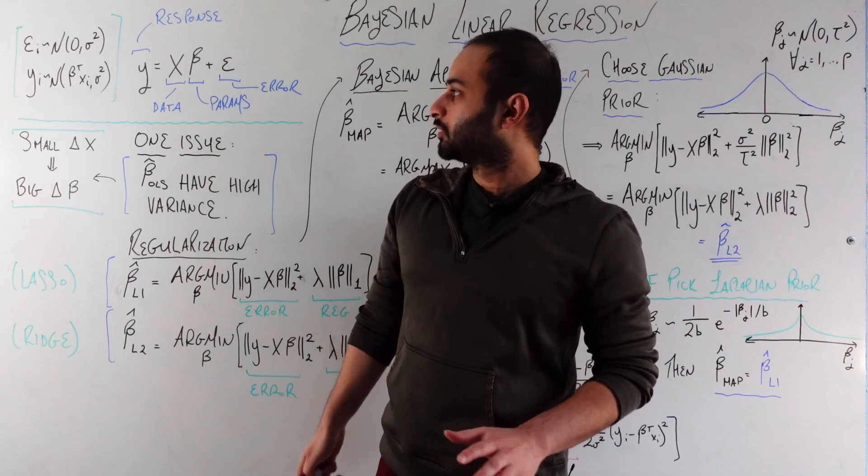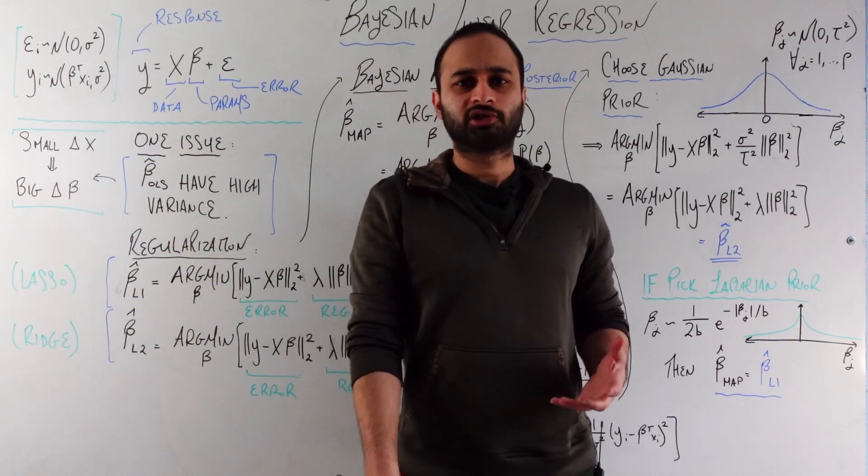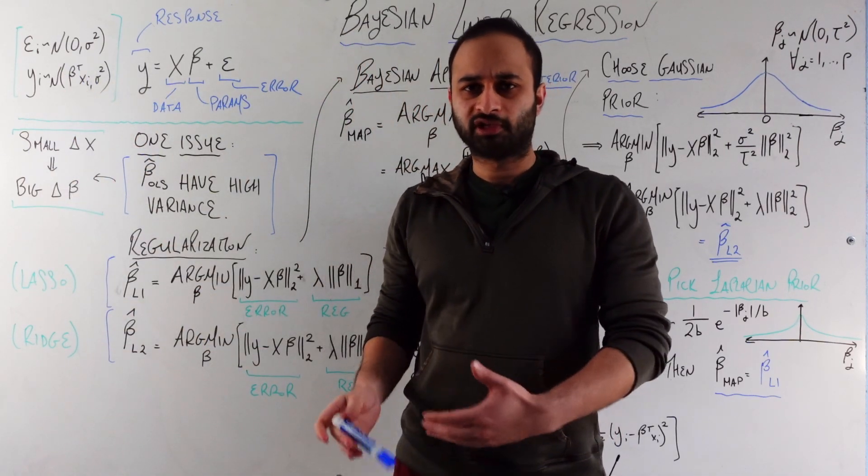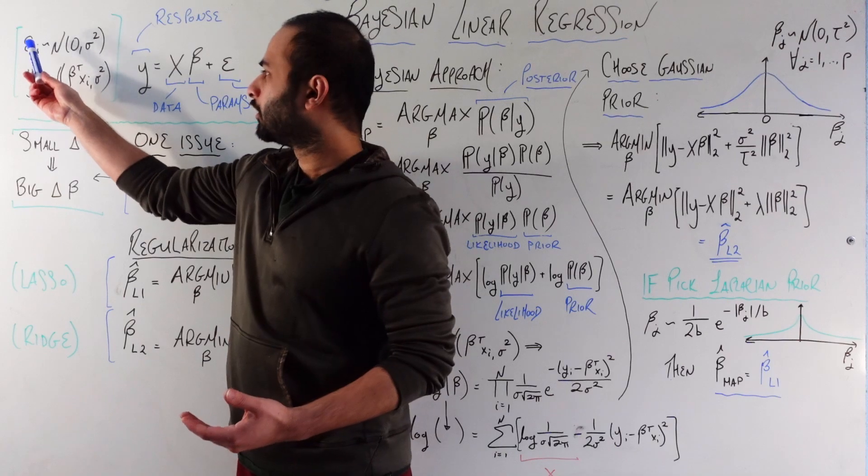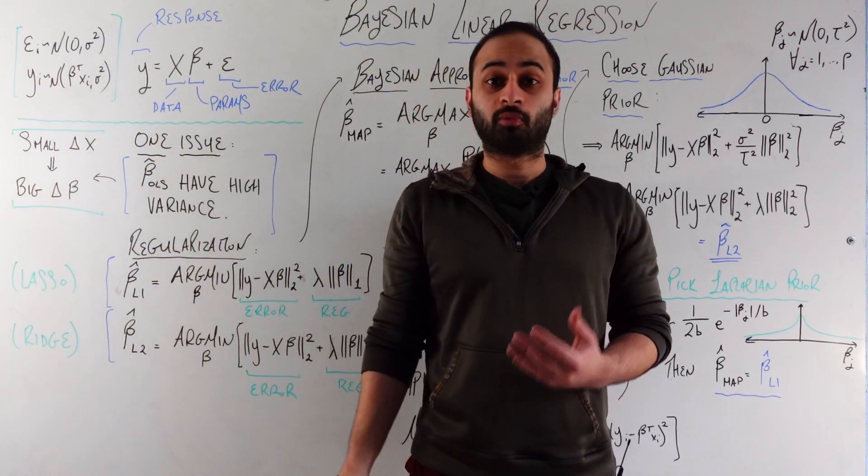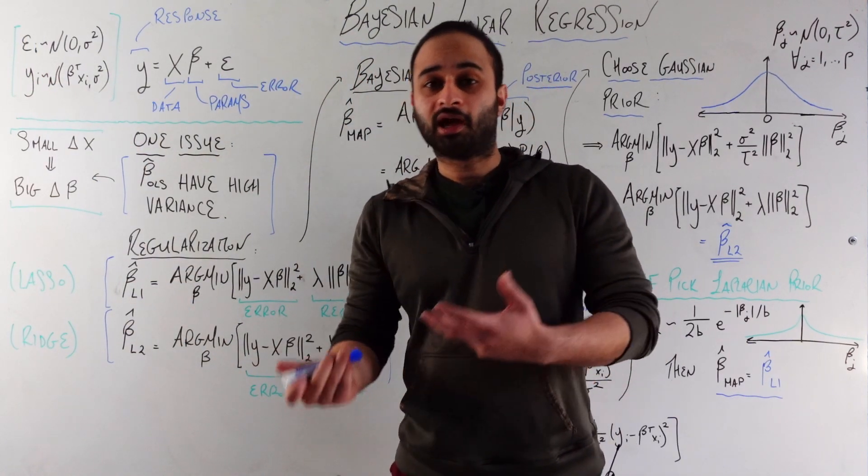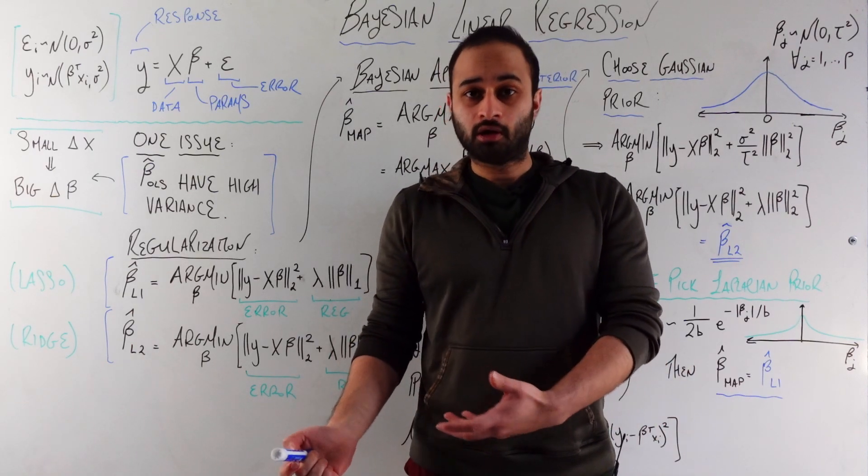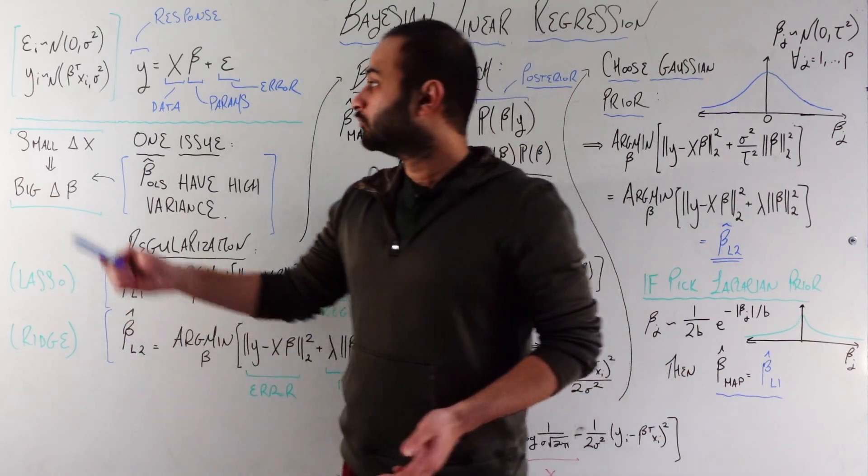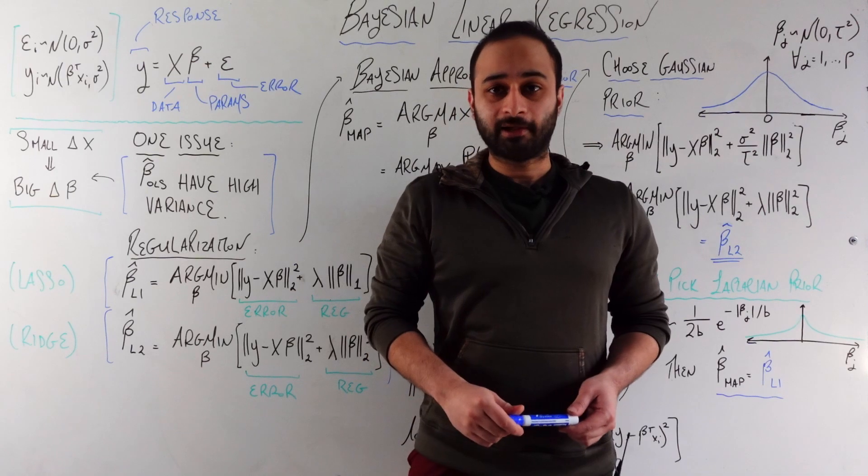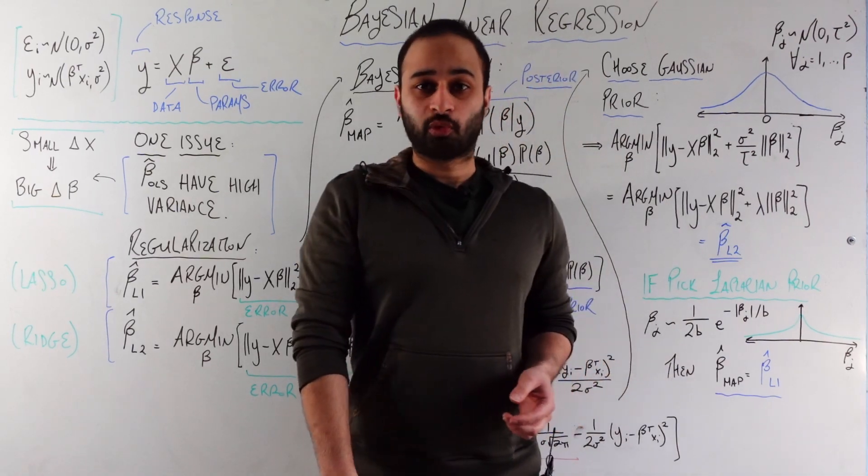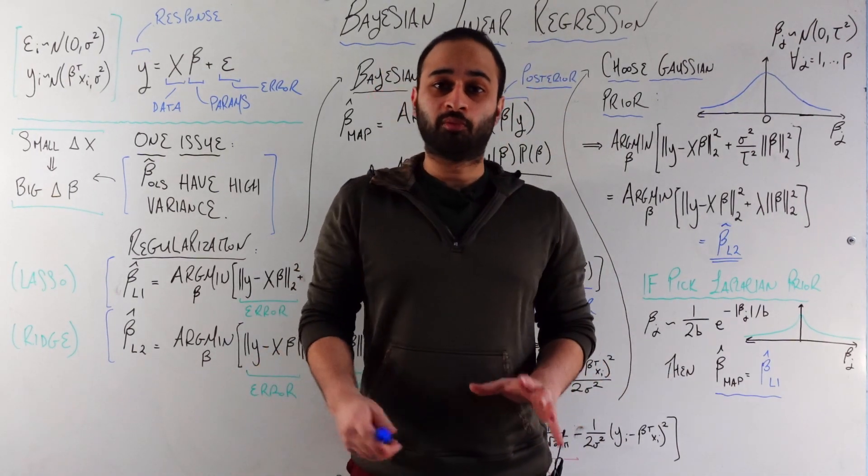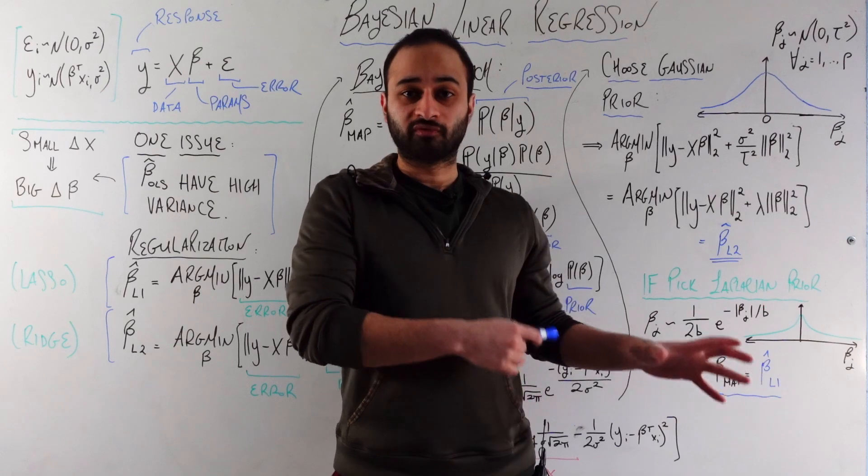In terms of equation, we're saying that x times beta plus some error epsilon is going to be equal to the response variable that we see. That is our assumption for linear regression. A couple of other assumptions are stated here. We're assuming that these errors epsilon sub i, each of them is normally distributed with mean zero and variance sigma squared. We're also assuming that each of the yi are normally distributed with mean beta transpose xi, and variance also sigma squared.